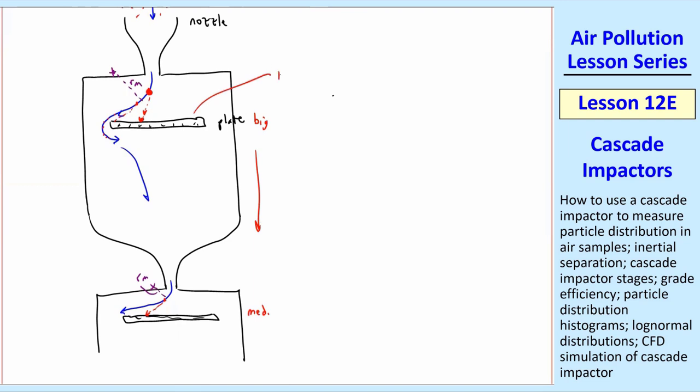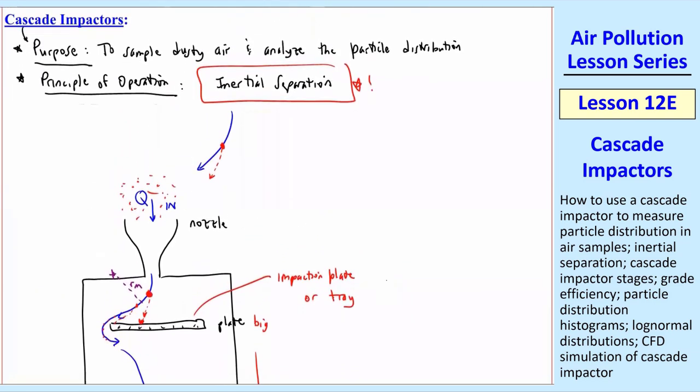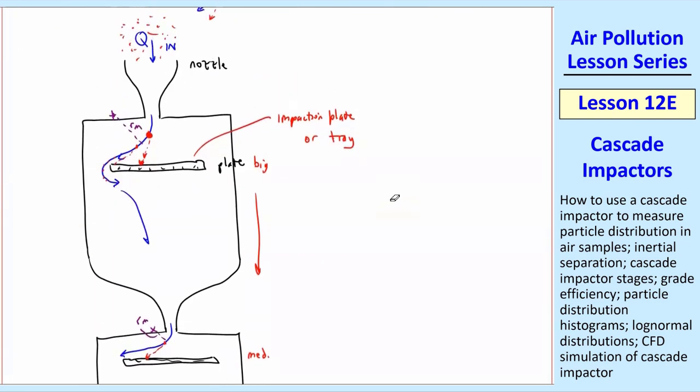This, by the way, is called an impaction plate or tray. When I have live classes, I bring one in to show you. I have some pictures here instead. In a real cascade impactor, these plates are able to be removed. So what you do is you weigh them before and after, and then the difference would be the weight or the mass of the particles that have been collected by that plate.